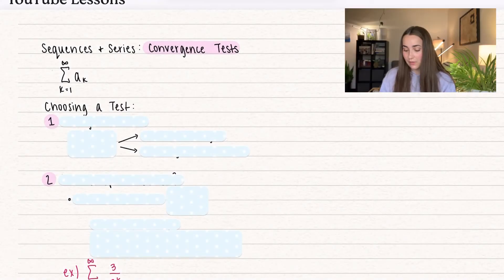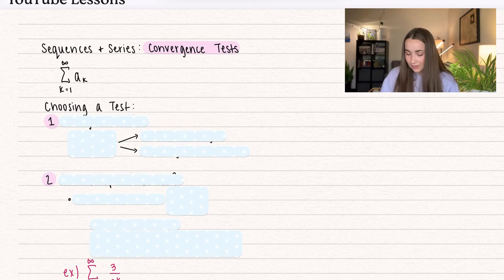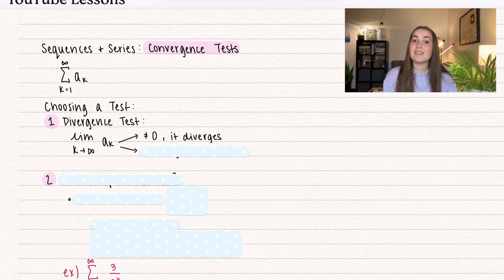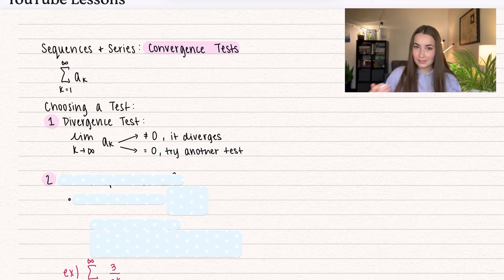So let's go ahead and dive into it. Of course, we need to have an infinite series. When choosing a test, the first thing I suggest is to apply the divergence test. This is where we take the limit as k approaches infinity of our a sub k, and there are two outcomes. If this is not equal to zero, then that tells us it diverges — you're done. The other option is that it equals zero, which means we need to try a different test.